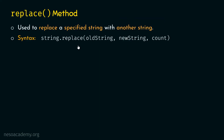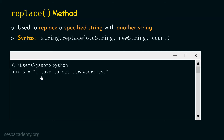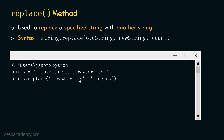Let's see how replace works. We type: s equal to 'I love to eat strawberries'. We want to replace the substring 'strawberries' with 'mangoes'. Typing s dot replace with old string 'strawberries' and new string 'mangoes', and hitting enter, gives us 'I love to eat mangoes'. By default, if strawberries appeared multiple times in the string, all instances would be replaced by mangoes.